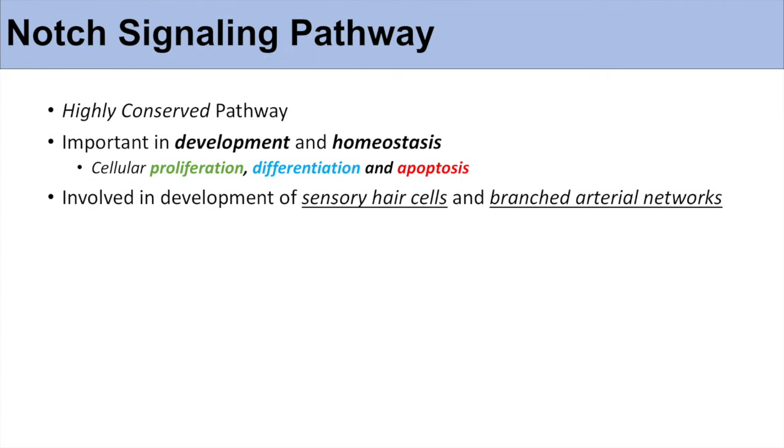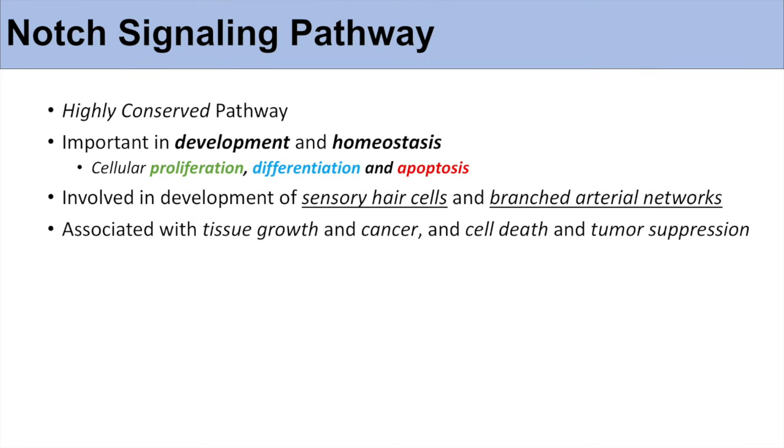Because the notch signaling pathway has roles in cellular proliferation, differentiation, and apoptosis, it has dual functions and seemingly paradoxical functions. So in some circumstances, the notch signaling pathway is associated with tissue growth and cancer, while in other circumstances, the pathway is involved in cell death and tumor suppression.